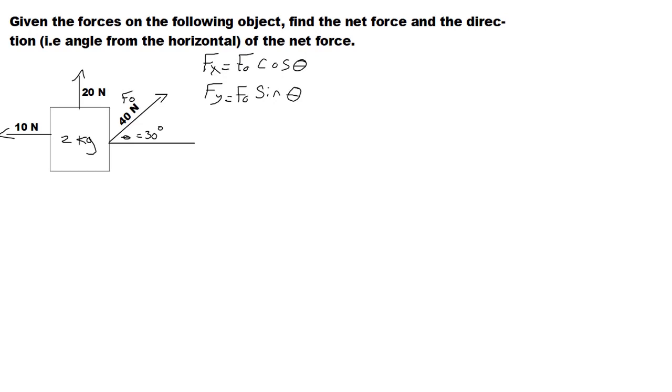Now we want to find the net x force. We have this force here for the x direction. We also have some component of this force, this 40 Newtons, in the x direction. So I gotta find that x, and that x is going to be given by negative 10, which is negative because it's to the left, plus 40 times the cosine of 30, which is positive because it's to the right.